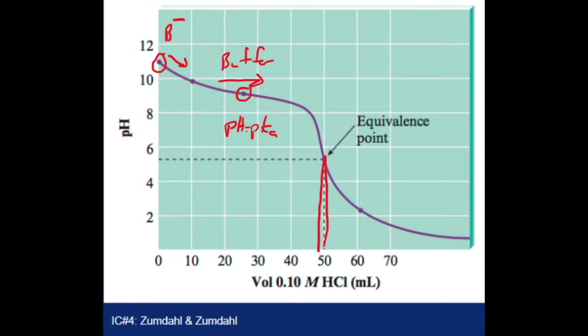So for a base, they normally give you a Kb value. And for this equation, we want the Ka value. So you're going to have to convert the Kb value into a Ka value. And remember, to find a Ka value, you could just take your water constant, 10 to the negative 14, and divide it by your Kb value. And that will give you your Ka value. And then you can plug that into the Henderson-Hasselbalch equation. Once you get past the equivalence point here, you just have an excess of acid. So you just have to find the concentration of the acid in your solution and find the pH from there.